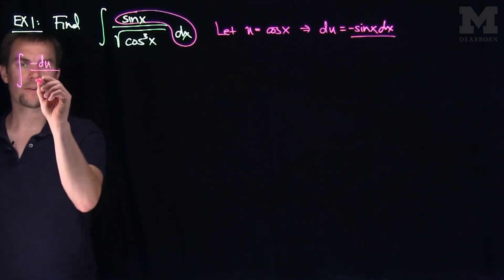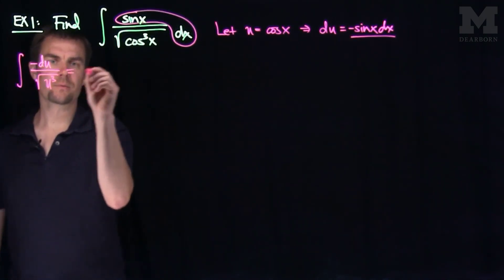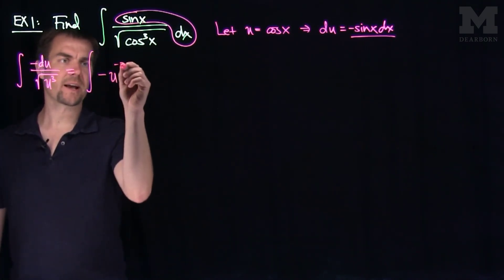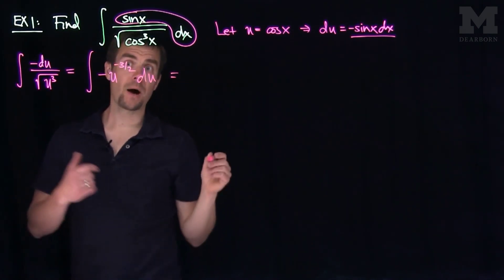Then in the denominator, I'm going to have a square root of u cubed. So if we rewrite this, we'll have the integral of negative u to the negative 3 halves power du. Now this is a power rule.